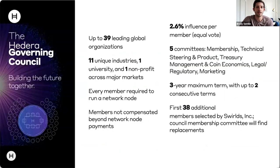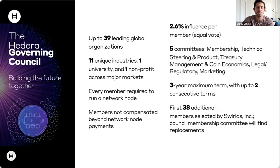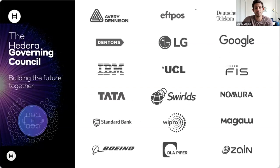The Governing Council is incredibly decentralized — up to 39 leading global organizations, with 22 existing today across various industries including universities and a major nonprofit. All governing members are required to run a network node. Currently the network is permissioned and run by those members, but it will become permissionless as we go on a path to complete decentralization. There are term limits, various committees, and all members have an equal vote — no one has more say than anyone else. You can find more information at Hedera.com/council. With that, I'll pass things to Deborah.